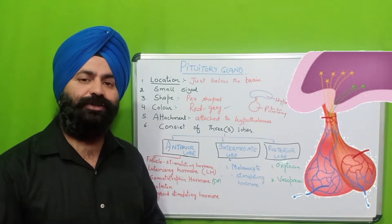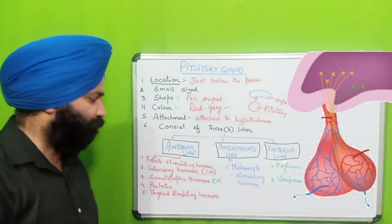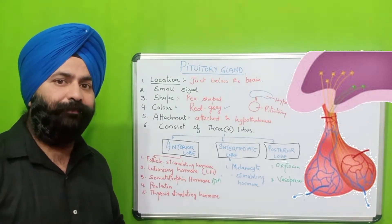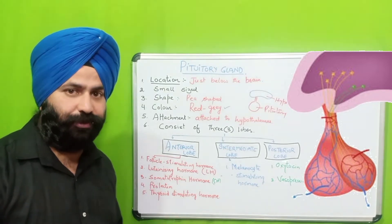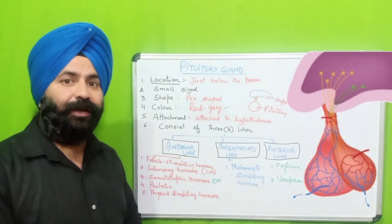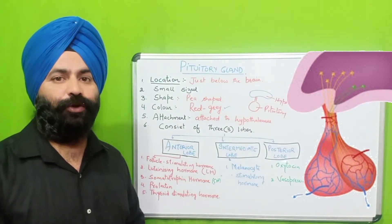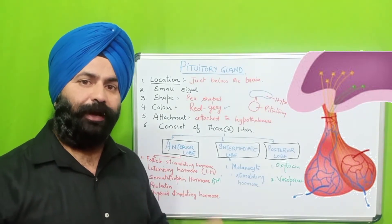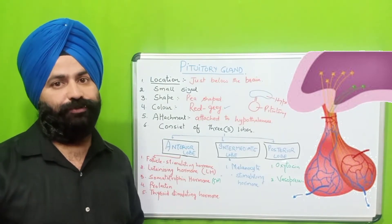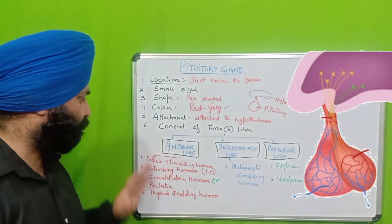We have three lobes in the pituitary gland, and the secretions are different for each. Now we will talk about the anterior lobe. The anterior lobe is an endocrine gland. The first hormone it produces is the Follicle Stimulating Hormone, FSH. This follicle stimulating hormone stimulates the formation of sperm in the case of males, and the formation of eggs in the case of females. This is the function of the follicle stimulating hormone.